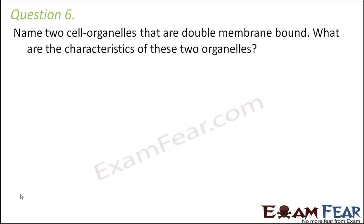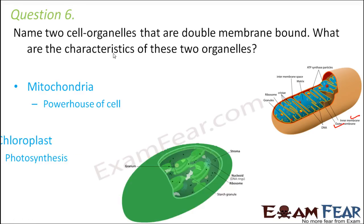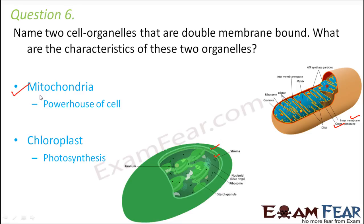Question six: name two cell organelles that are double membrane bound. The mitochondria has two membranes — an outer and an inner membrane. The chloroplast also has two membranes — an outer and an inner membrane. Mitochondria is the powerhouse of the cell and produces ATP molecules. Chloroplast helps in the process of photosynthesis.